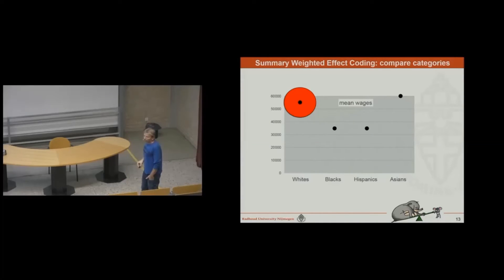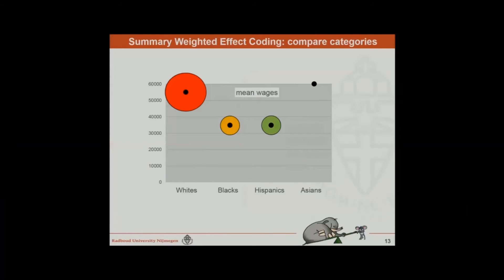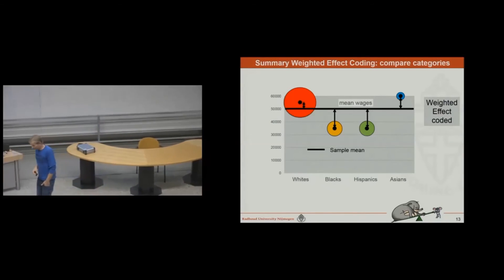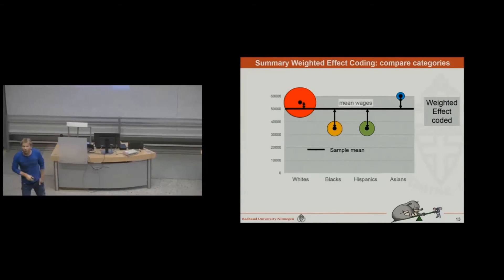As I showed you, we could also take into account the situation that the numbers of observation across these four categories are not equal at all. So if we take the sample mean, which is about $50,000, we get the deviations over here, which is called weighted effect coding. And that was the invention made by Sweeney and Yulvring in 1972. And it's now in all important software packages, so you can use it if you like.